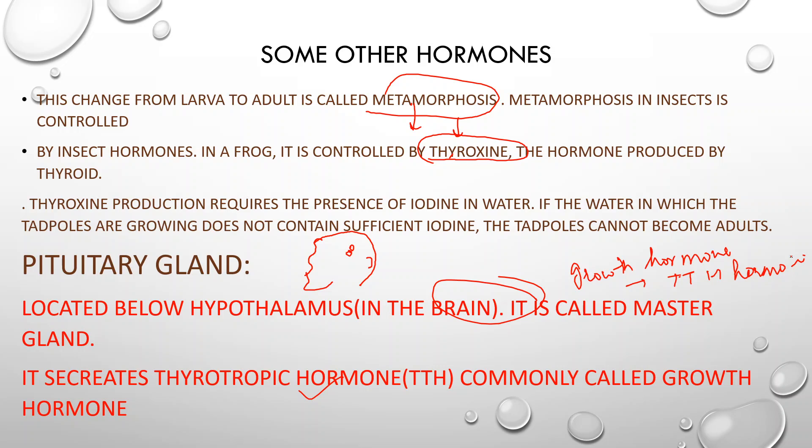To summarize: the master gland is the pituitary, which secretes the TTH hormone — that is the thyro-tropic hormone — also known as the growth hormone.